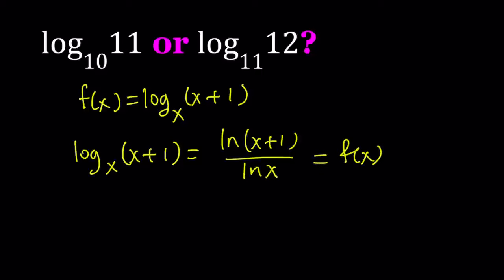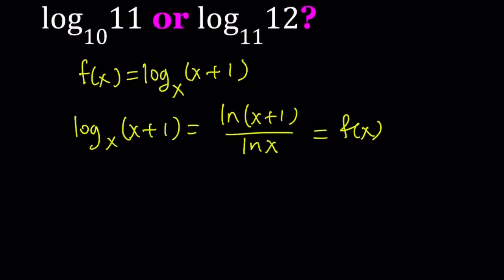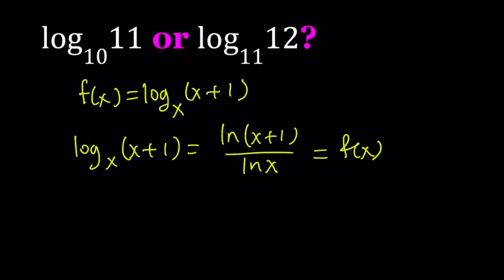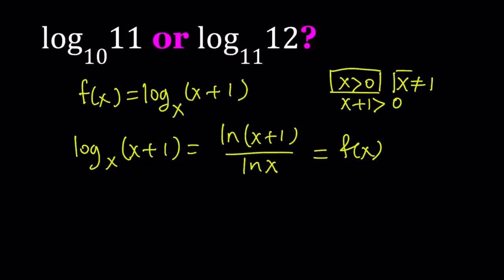I'm going to be using two functions here. This one I'm going to call f(x), and the other one I'm going to call g(x). Notice that we have some restrictions: the base cannot be 0, it needs to be greater than 0 and cannot be 1. And x+1 also needs to be greater than 0, but that's already covered by x > 0, because if x > 0 then x+1 > 0 as well. So x should not equal 1 and x should always be positive.